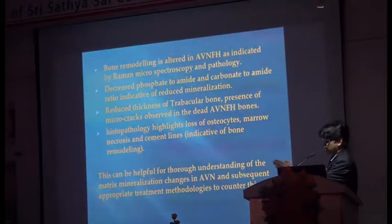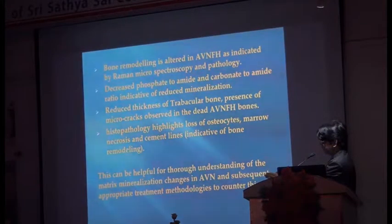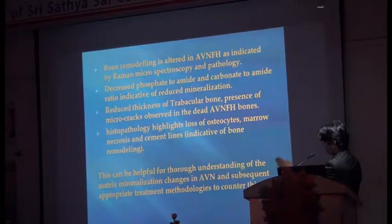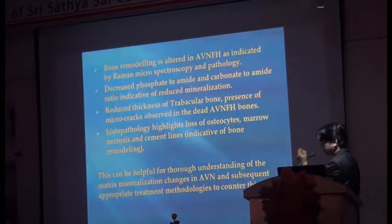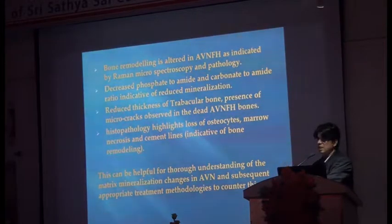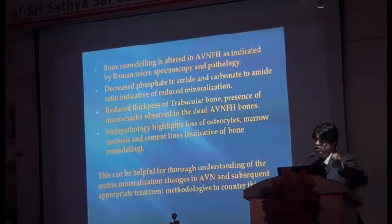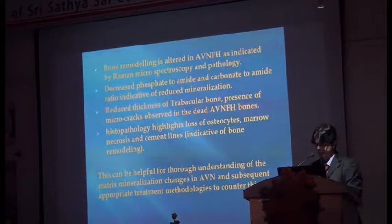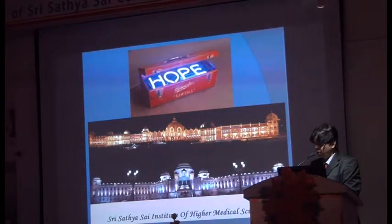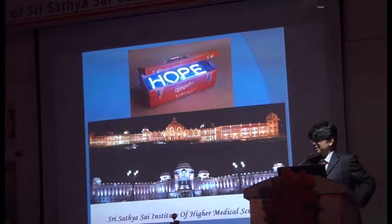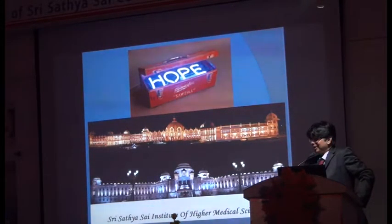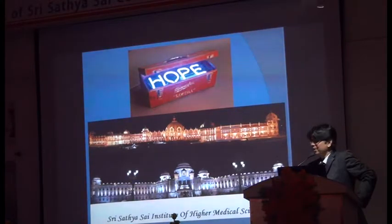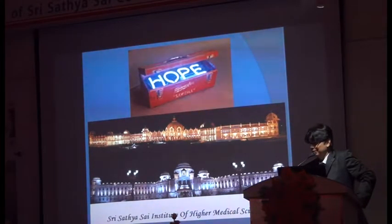This work can pave the way for newer drug trials which inhibit the homocysteine pathway. If we inhibit the homocysteine pathway, can we prevent AVN? That remains a big question. Raman microspectroscopy can be helpful for thorough understanding of matrix mineralization at different areas from non-disease to disease zones at the molecular level. We hope to extend this study and eventually unravel more mysteries of AVN in the near future.